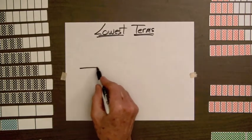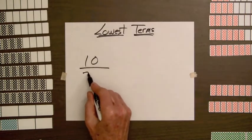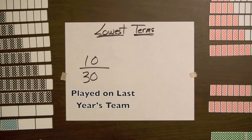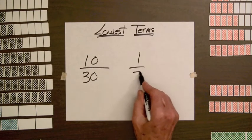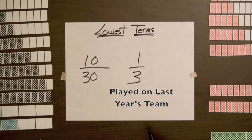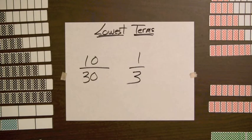We can say ten-thirtieths of the students played on last year's team, or we can say one-third of the students played on last year's team. Students will be able to see that fractions with smaller numerators and denominators are easier to think about.